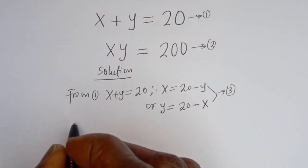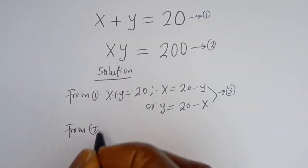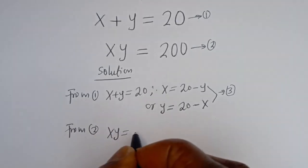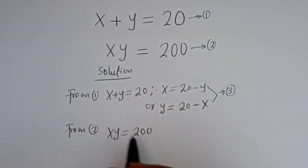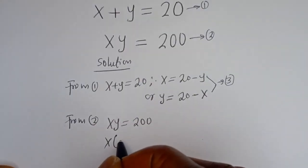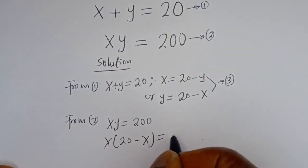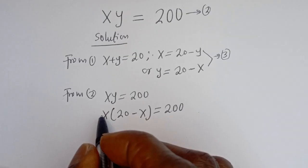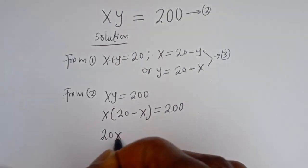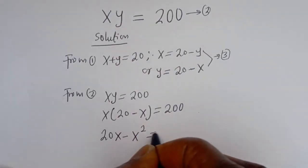Now if y is equal to 20 minus x, from equation 2 we have x times y equals 200. Substituting, x times bracket (20 minus x) equals 200. Let's open the bracket: x multiplied by 20 gives 20x, minus x multiplied by x gives x squared.